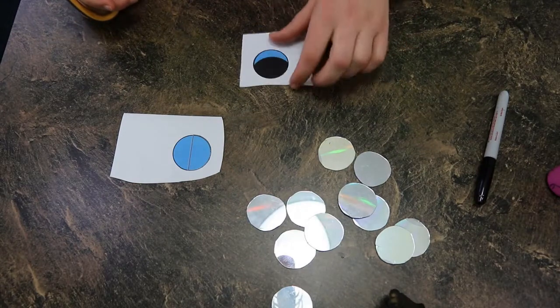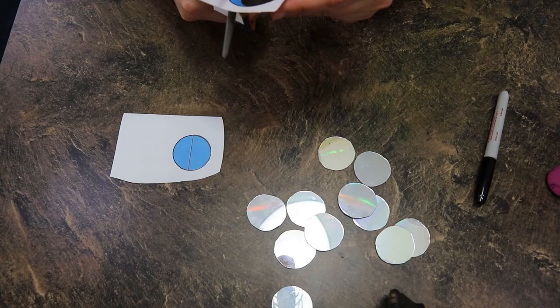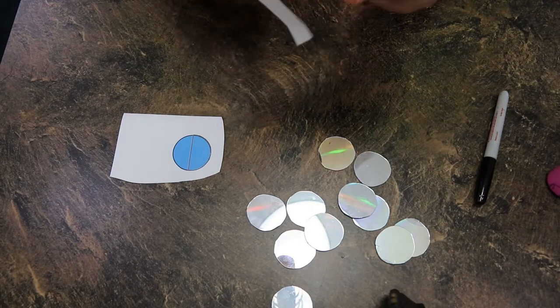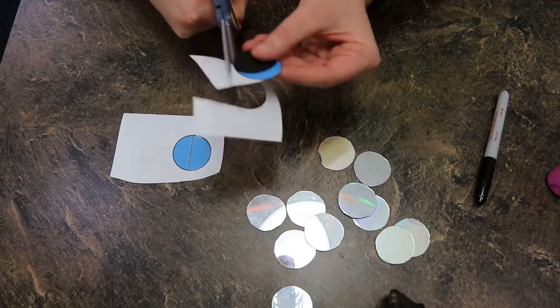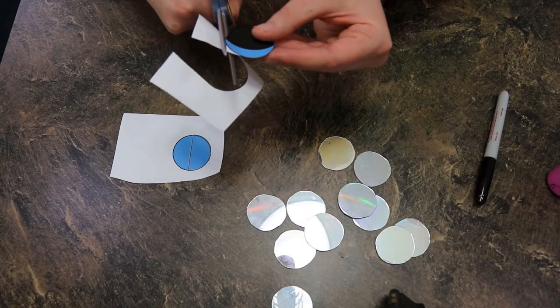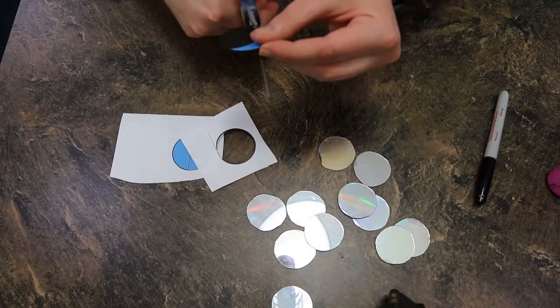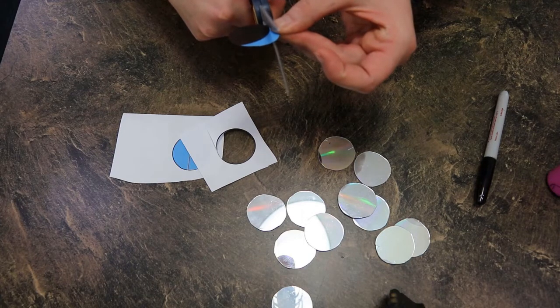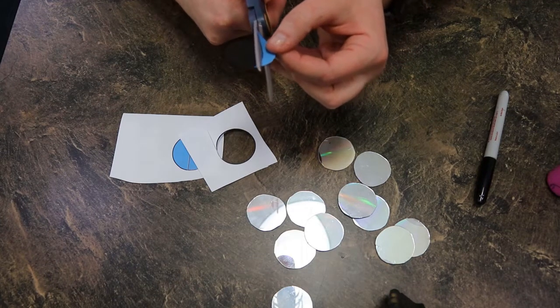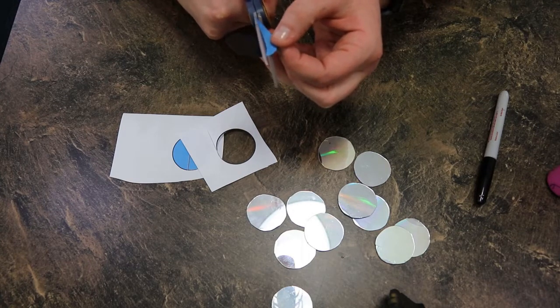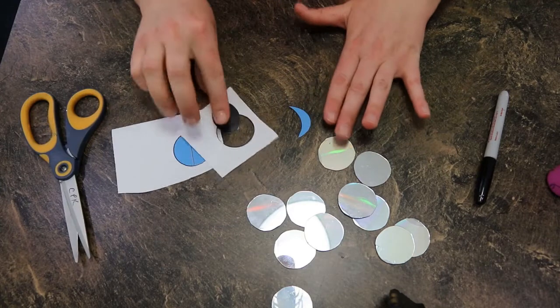The next step is to take this template that we have created that gives us the shapes of our different moons and we're going to go ahead and cut those out. Now I'm going to show you a little trick in the way that I made these templates. So you see that we have one circle here. We are going to cut this along the different colors so we are going to have our blue moon and then we are going to have our black moon.